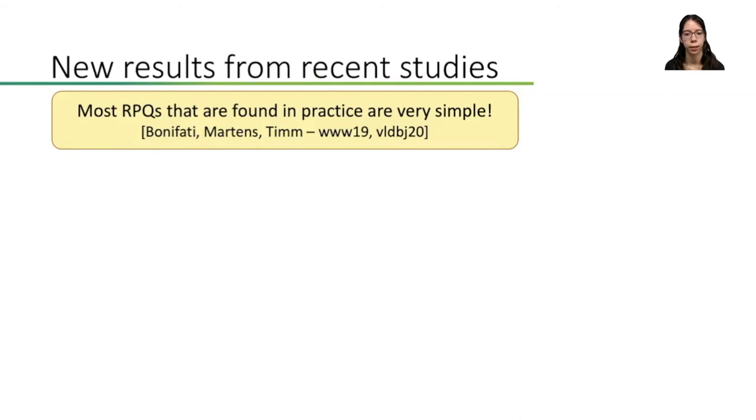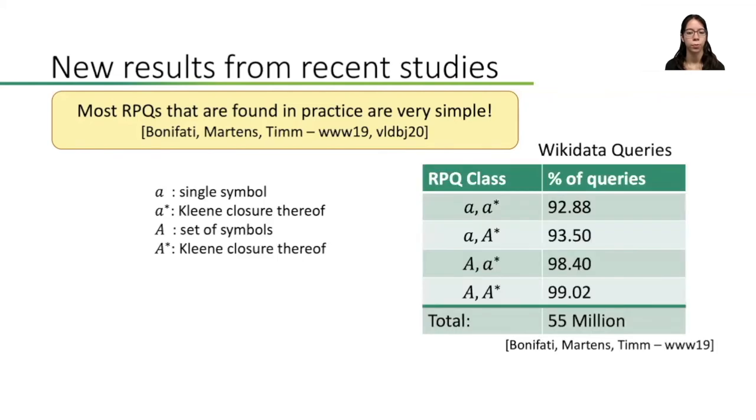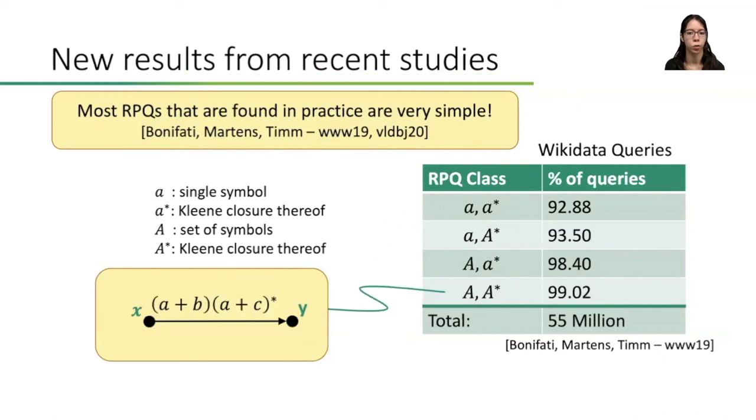Bonifati, Martens and Timm analyzed which queries users script on databases and came to the conclusion that most queries are very simple. To give you an impression, let's have a look at their results from Wikidata. From the 55 million regular path queries they found in their logs, more than 92% were just concatenations of single symbols and single symbols under a star. An example of this class is this query here. If we additionally allow disjunctions of single symbols and disjunctions under a star, like in this expression, then this even covers more than 99% of the regular path queries found in the logs.